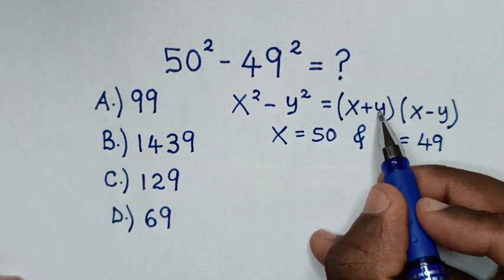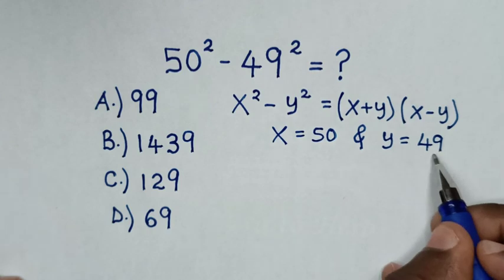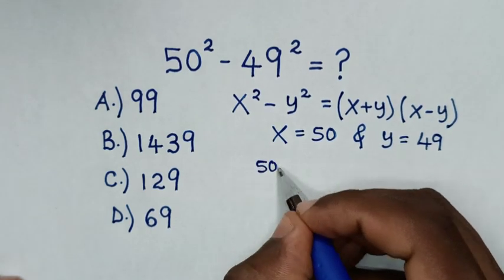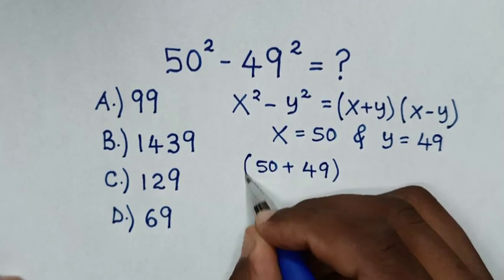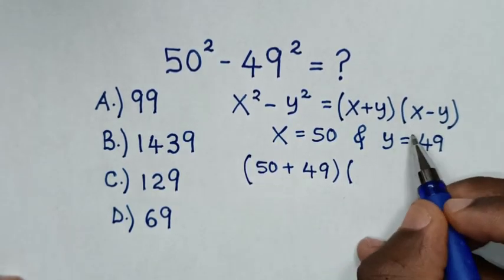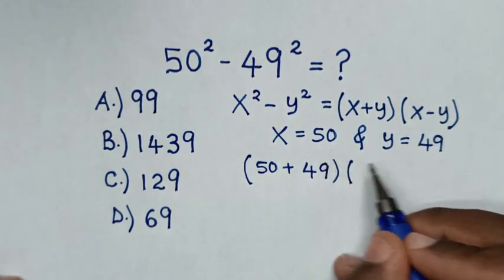Then it will be x plus y is 50 plus 49, bracket, times x minus y is 50 minus 49.